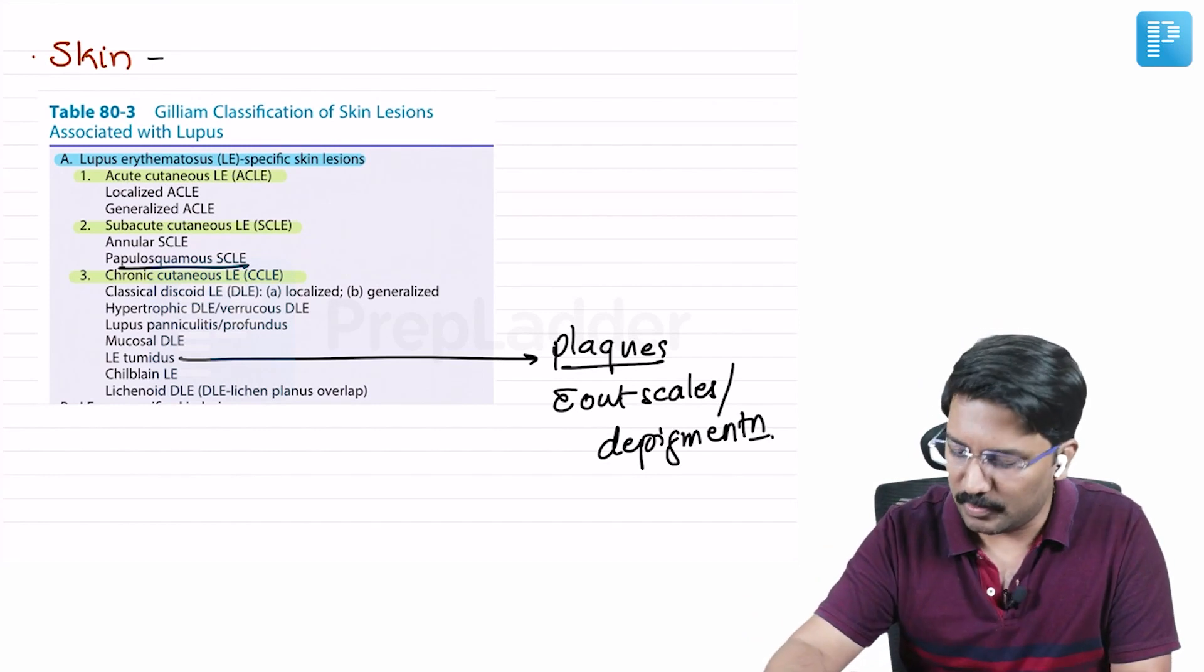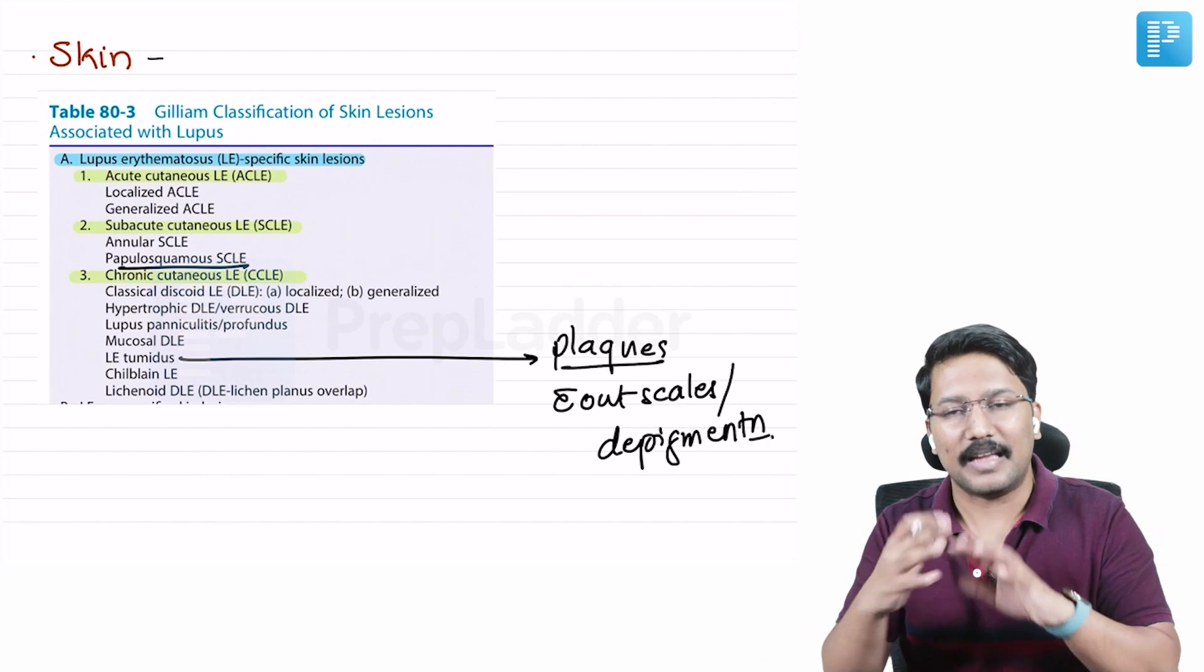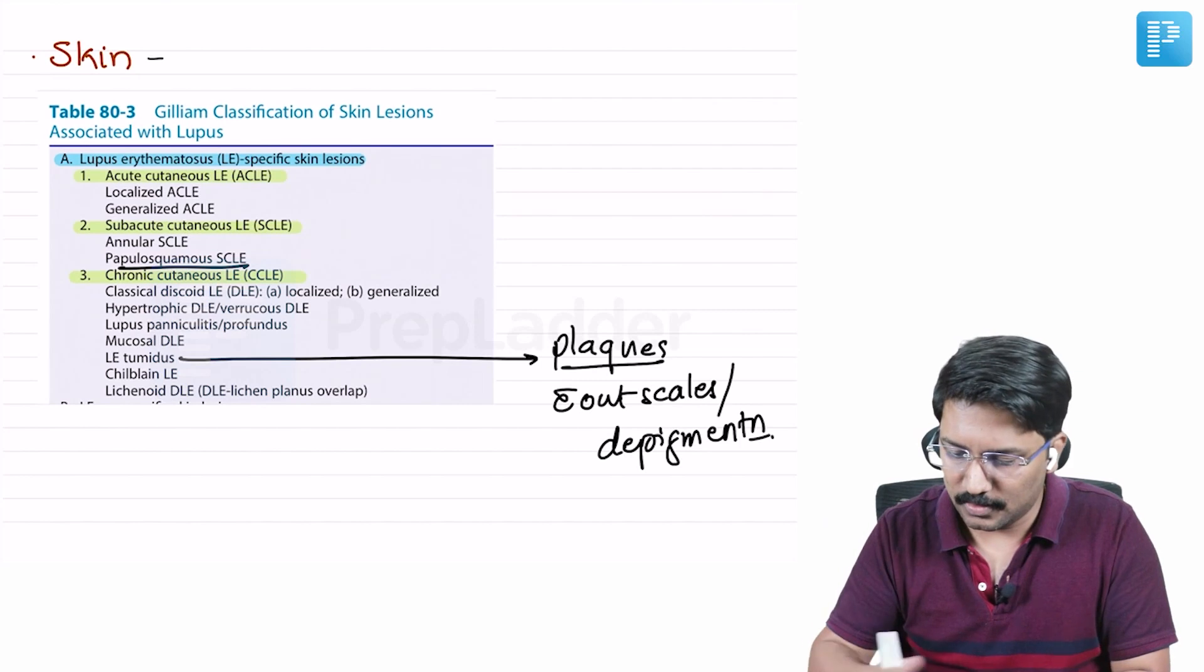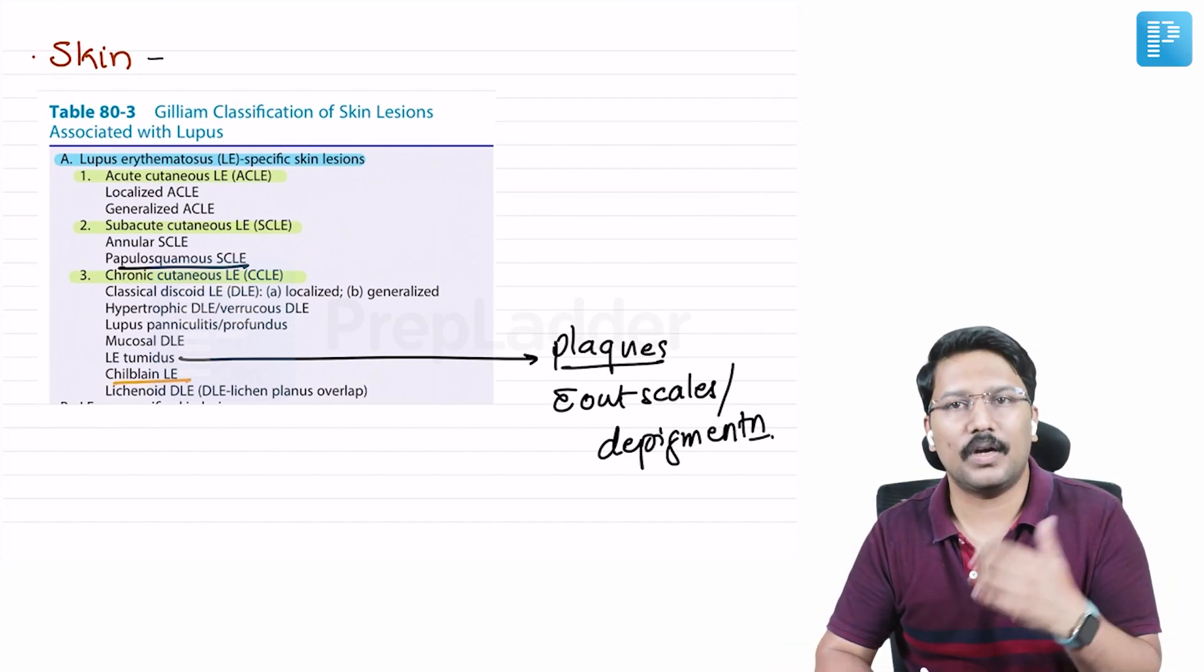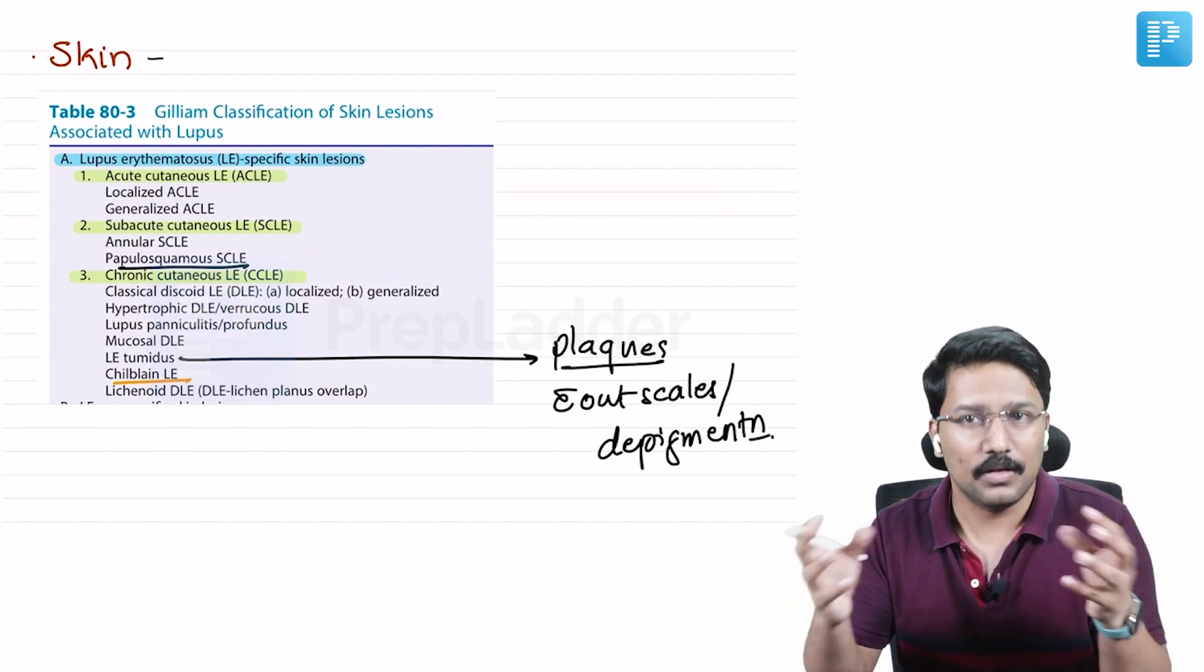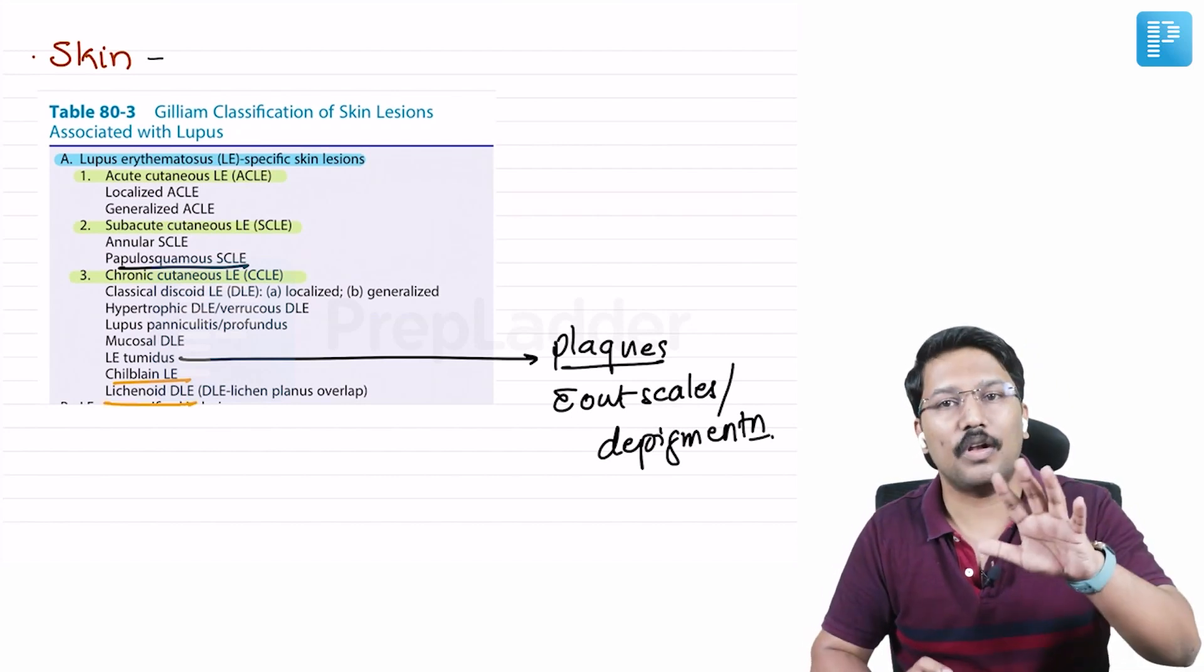Then we also have Chilblain lupus erythematosus, which is nothing but acral lesions - lesions mainly in the acral areas which are triggered by exposure to cold. And then we also have a condition where there is lichen planus and DLE overlap - lichenoid DLE is what we call them. So these are all specific.